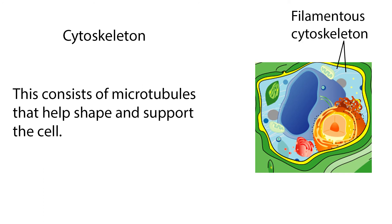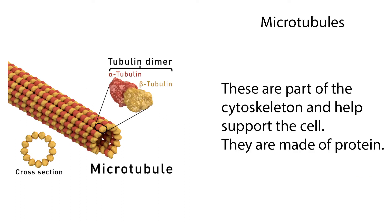The cytoskeleton consists of microtubules that help shape and support the cell. Microtubules are part of the cytoskeleton, help support the cell, and are made of protein.